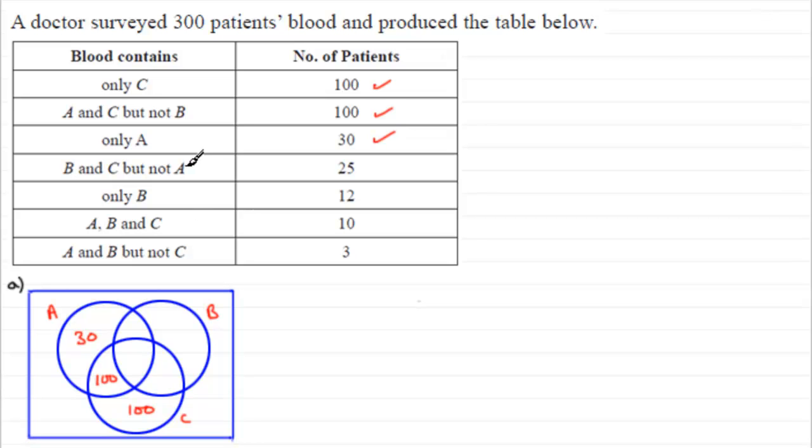B and C but not A. B and C would be these two regions, but not A just reduces it down to this region here. And that's 25 then.